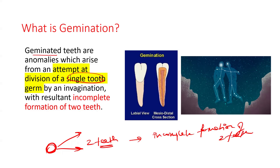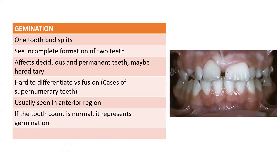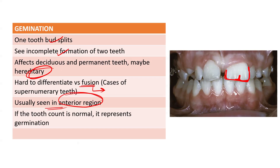As you can see in this picture, this has arisen from one tooth part and there is a slight notch in the incisal tip because this tooth tried to separate into two teeth. In this diagram, this is your maxillary central incisor — there is a slight notch in the incisal region, which is an attempt of the tooth to divide into two. It affects deciduous and permanent teeth, may be hereditary, is hard to differentiate from fusion, and is usually seen in the anterior region.